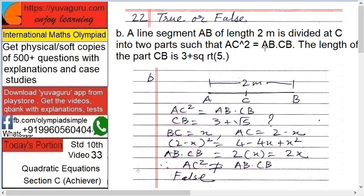Next. A line segment AB of length 2 meters is divided at C into two parts such that AC² equals AB into CB. The length of CB is 3 plus √5. Is it true or false? What are the two conditions given? AB is divided by C such that AC² equals AB into CB, and CB is given as 3 plus √5. This is what we have to check.